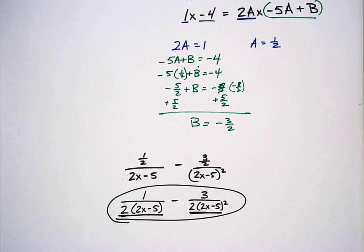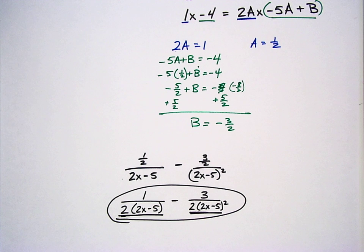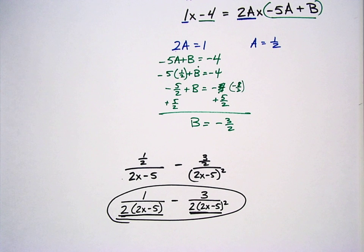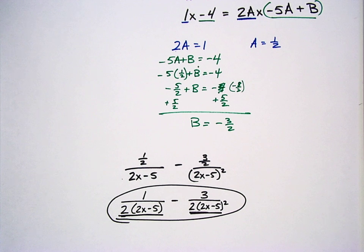There are our two examples for repeated linear factors. Just remember: if you have a linear factor raised to an exponent, write it to the first, to the second, to the third — however many times that exponent is — and that should work out. Good luck and enjoy.